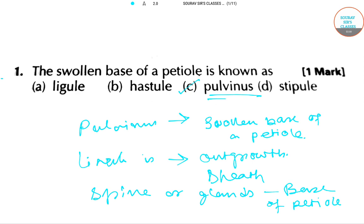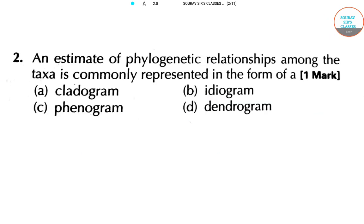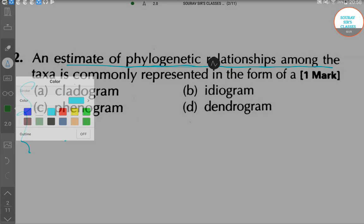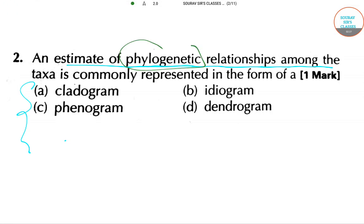So the answer for the petiole question is palvenous, that is option C. Moving to the next question: the estimate of phylogenetic relationship among the taxa is commonly represented in the form of which of the following? This question is about a phylogenetic tree.